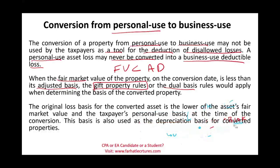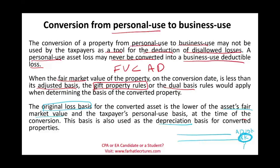When you convert an asset, you also have to depreciate it. The depreciation basis is the lower of the adjusted basis or the fair market value at the time of conversion. In our example, the adjusted basis was $10,000 but the FMV was $8,000 at conversion, so the depreciation basis — which is also the loss basis — is $8,000.